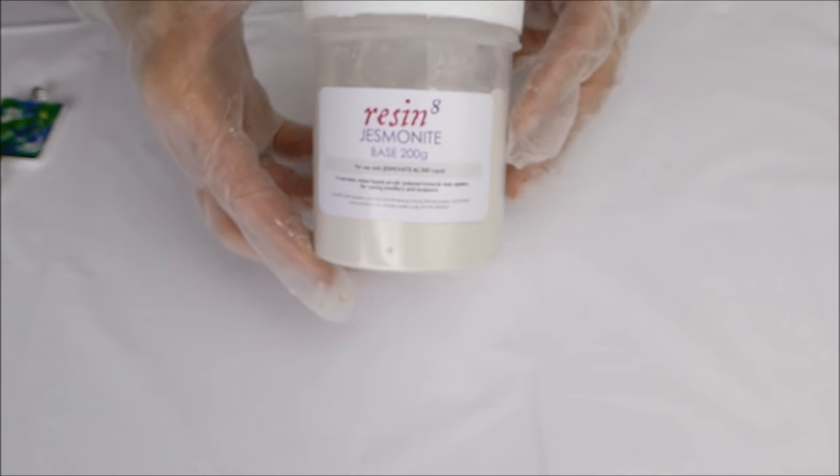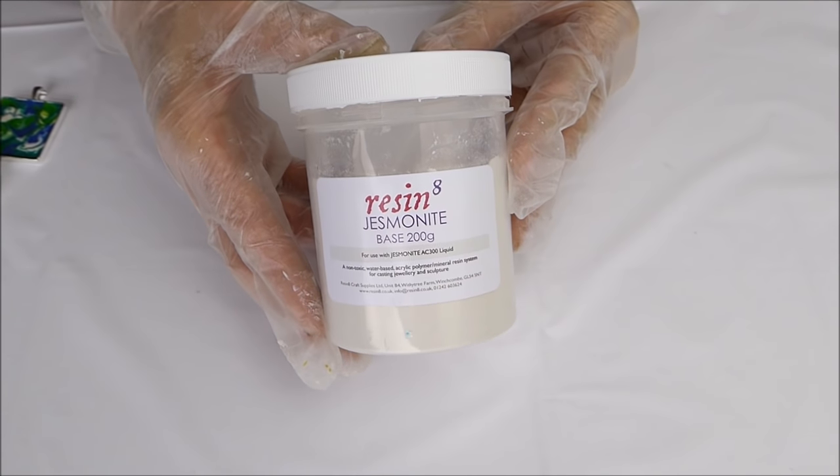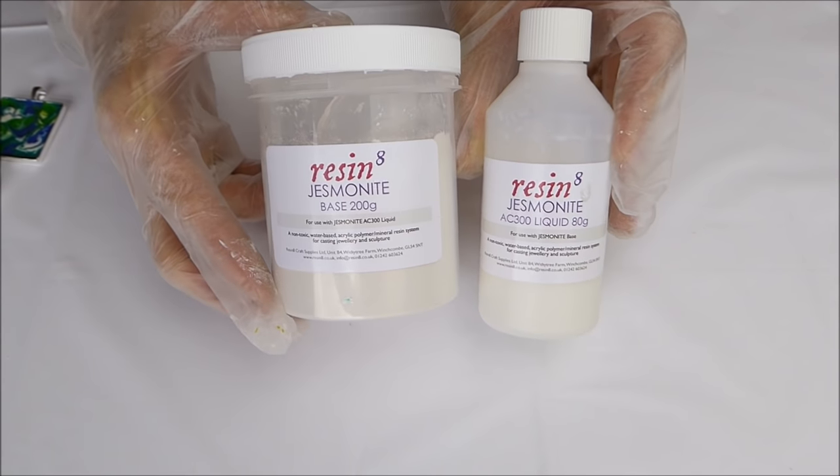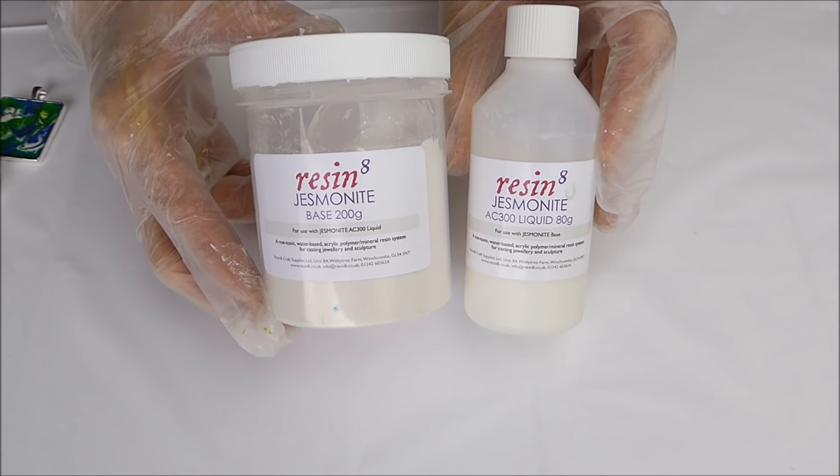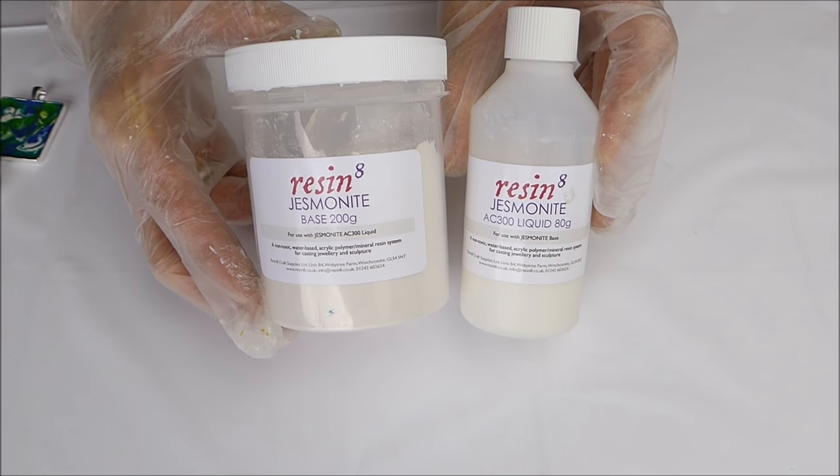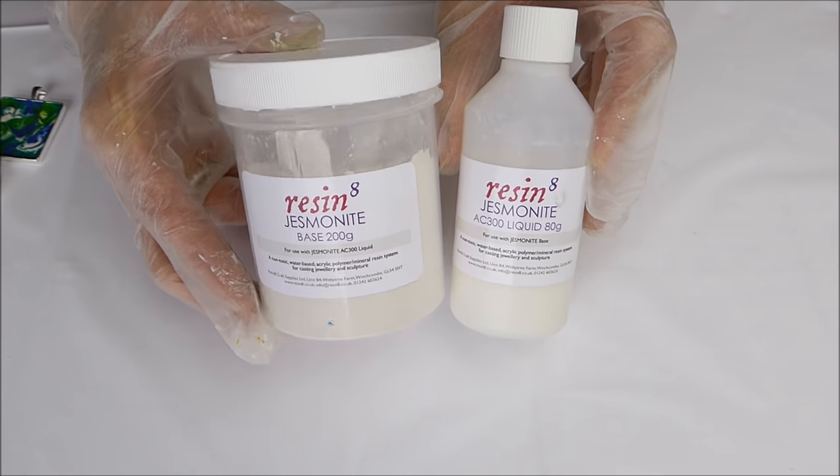First of all you're going to need your base powder and then you're going to need your liquid to add to the base powder. Now the ratio is one part of the liquid to two and a half parts of the powder by weight, so we'll get weighing.